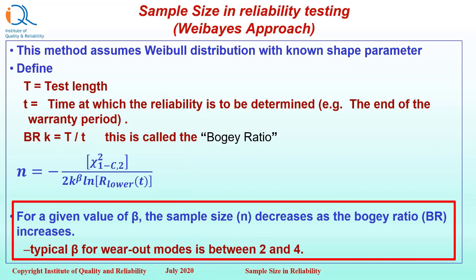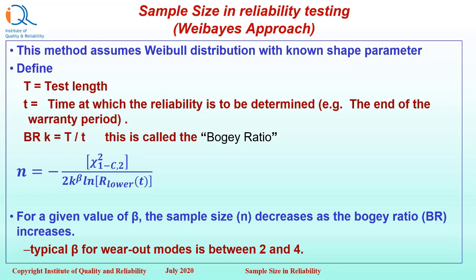For a given value of beta, the sample size n decreases as the bogey ratio increases. Typical beta for wear out modes is likely to be between 2 and 4 but it could exceed these values as well.